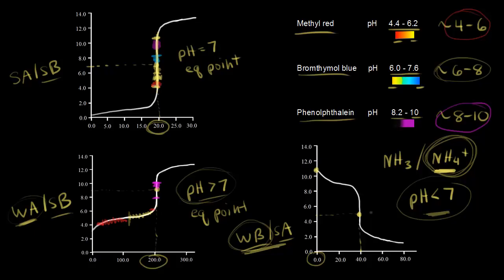Since the pH is less than seven, you want an indicator that changes color at a pH less than seven. Methyl red is a really good choice — it's yellow at about pH 6 and then changes to red, marking the endpoint and a good approximation of the equivalence point. You wouldn't want to use phenolphthalein because it changes color up around pH 8 to 10, which means you'd miss the equivalence point entirely. Methyl red would be the best choice.